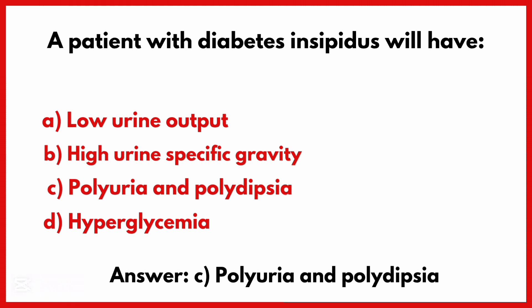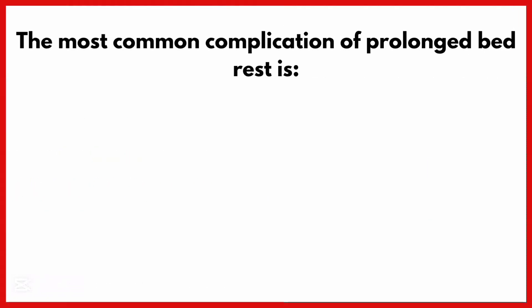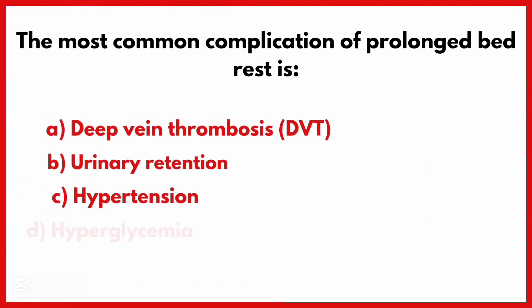A patient with diabetes insipidus will have — the correct answer is option C: Polyuria and polydipsia.